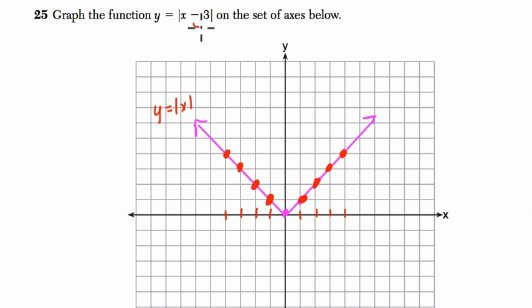But with function transformations, if you're going to subtract 3 here, it's like subtracting 3 from your input, you're going to actually move 3 places to the right, 1, 2, 3 here. And you get this new function.